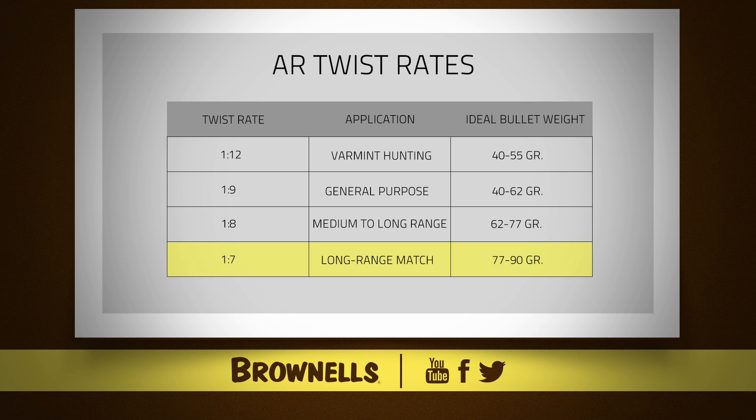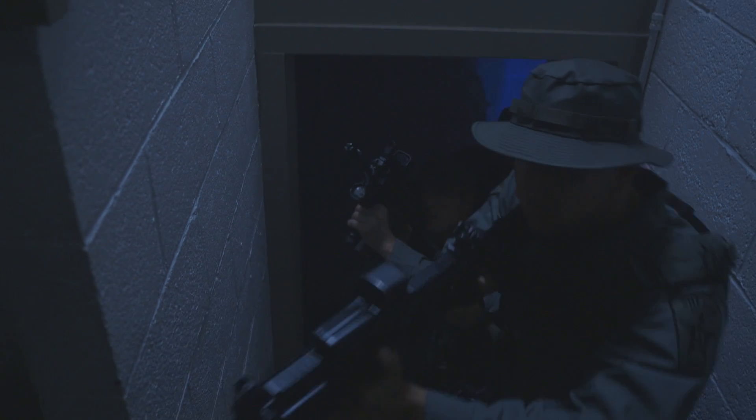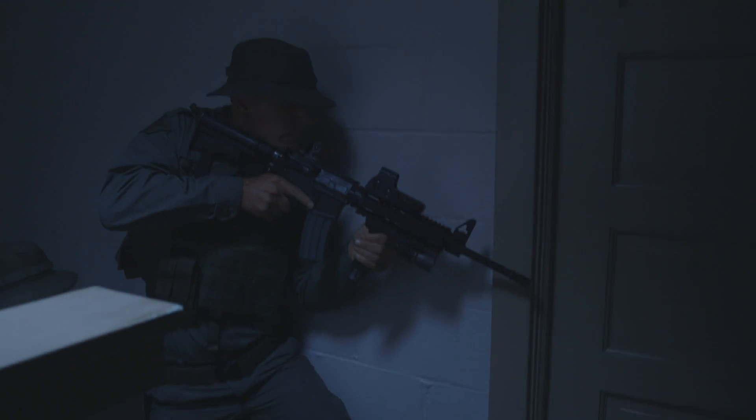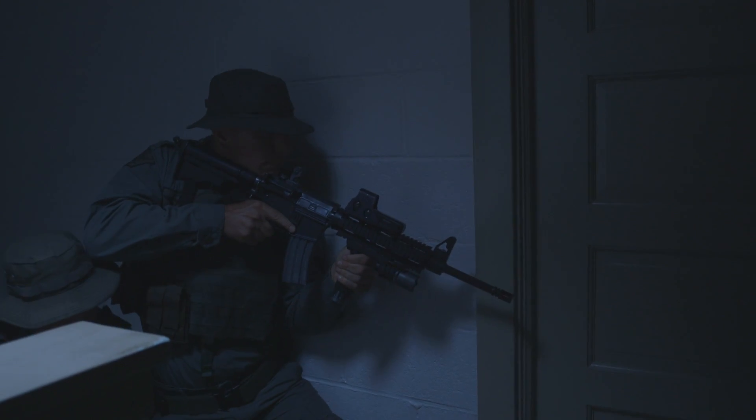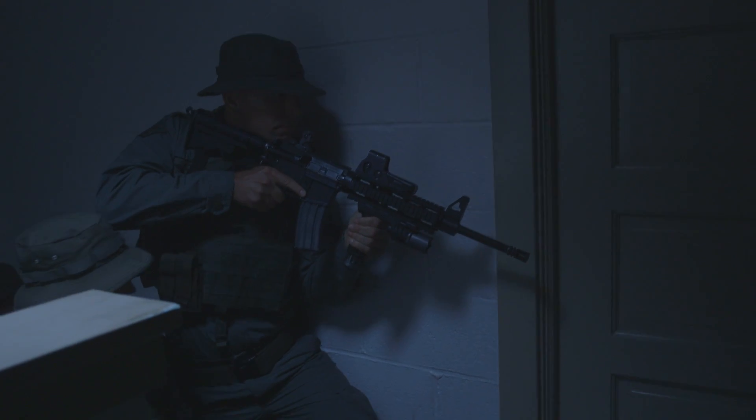The fastest commercially available twist rate in the AR world is the 1-in-7. This is what you need if you want to shoot any of the heavier long-range match bullets that can weigh up to 90 grains. A faster twist rate is also better at stabilizing some of the military loadings with steel penetrator cores, as these tend to be longer than conventional bullets of the same weight and thus need to be spun faster.